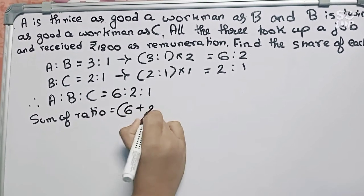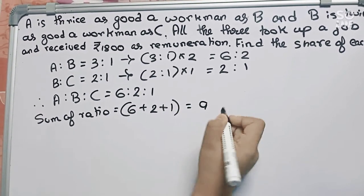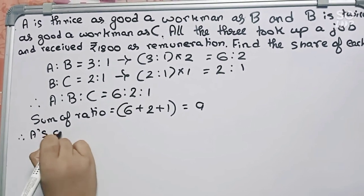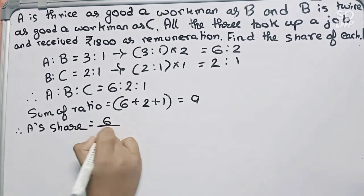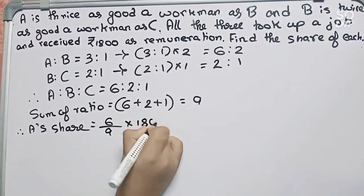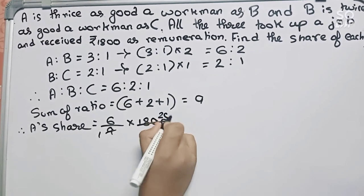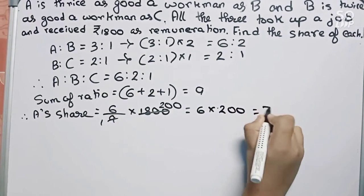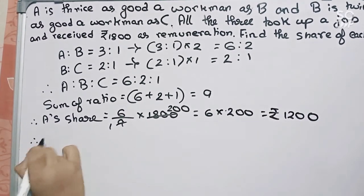Six plus two plus one which is nine. Now we can easily find the share of each. Therefore A's share = 6/9 × 1800. This becomes 6 × 200, which is 1200.